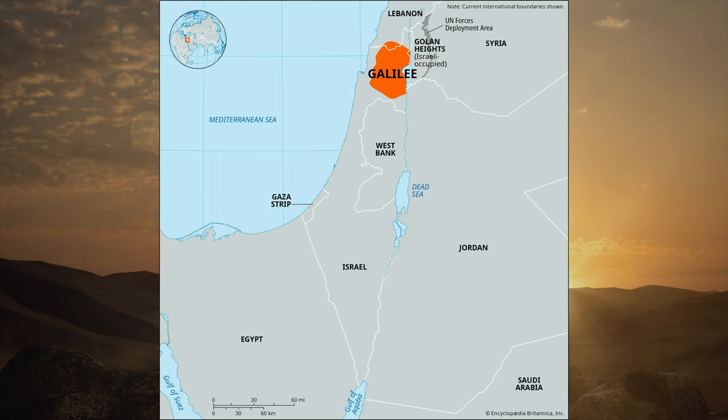You can see the Gaza Strip there, where Israel is currently at war with Hamas, and you can see the surrounding countries of Lebanon, Syria, Jordan, and Egypt. So Jesus travels to the Galilee to begin his ministry after John is put in prison. He is returning to Galilee from Judea, where he was baptizing and gaining new disciples.